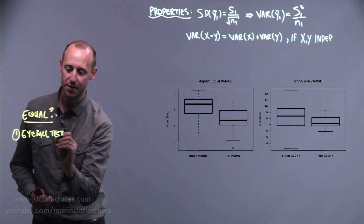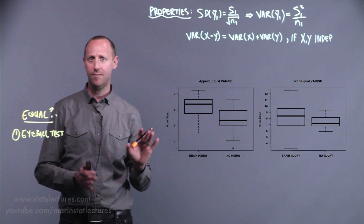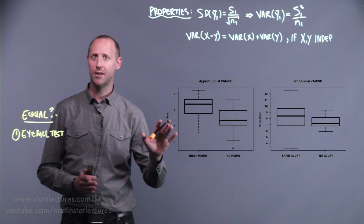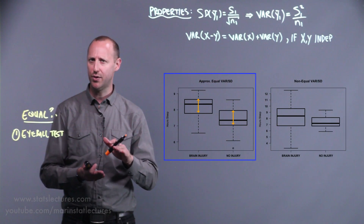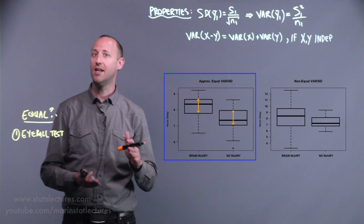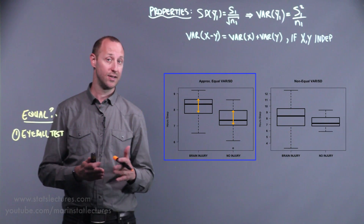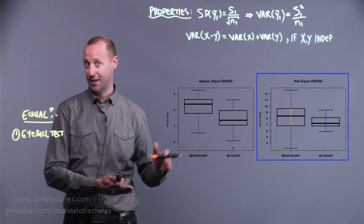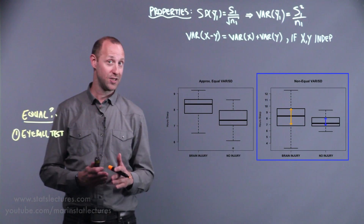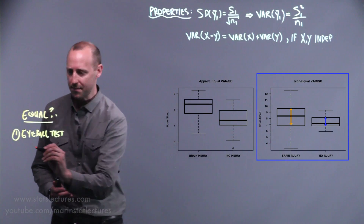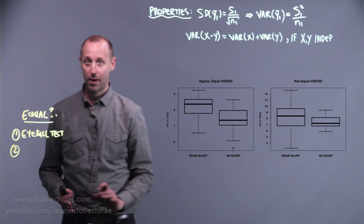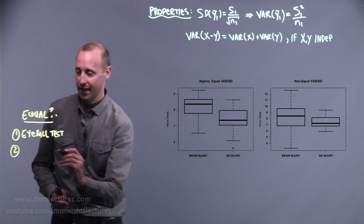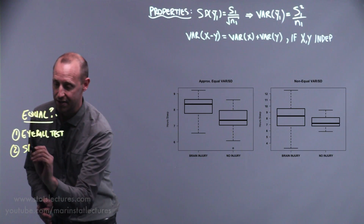It's a bit subjective, but looking at box plots of the two groups, we ask: do we think the variability in the two is roughly the same, where any difference is due to sampling variability, or do we think the two are quite different at the population level? A second way is by comparing the standard deviations of the two groups.